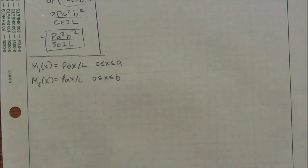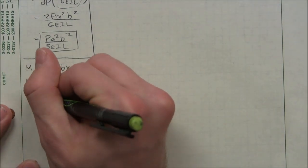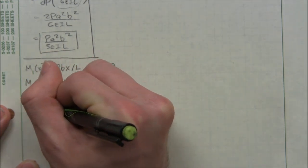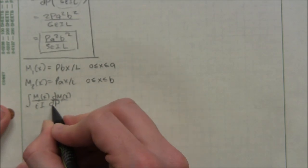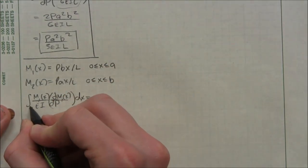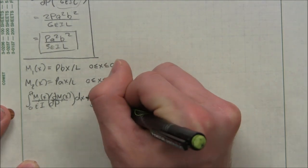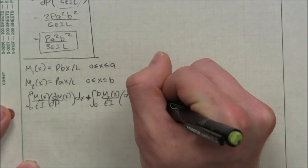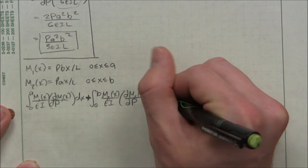All right, now it's very similar to setting up a strain energy problem. And we just have a slightly different integral. It's going to be the integral of M1 of X over EI times dM1 dP. This is from 0 to A, plus the integral of M2 of X over EI times dM2 dP.